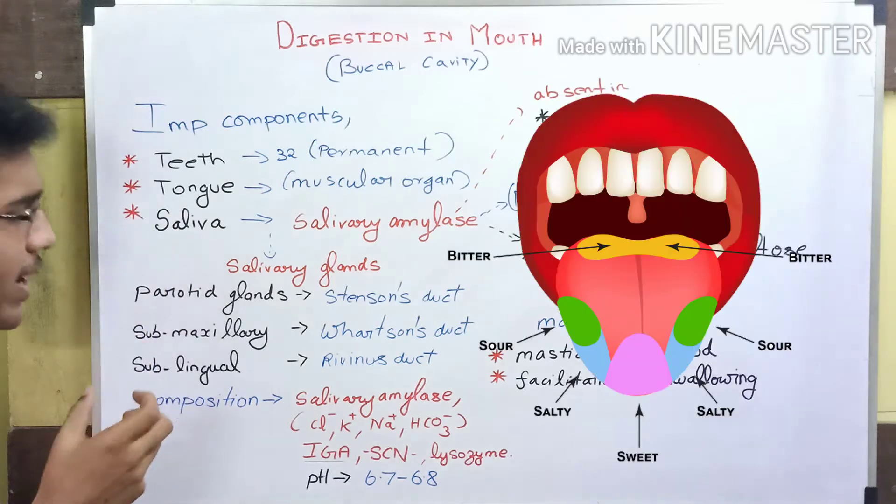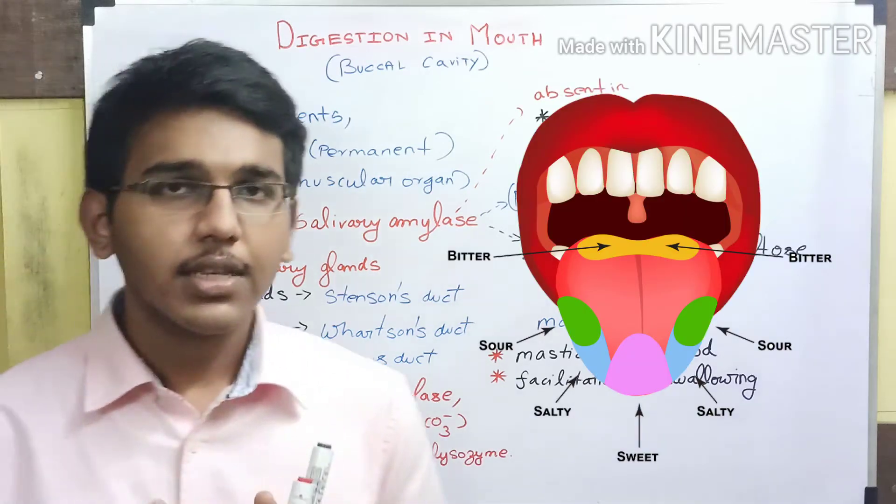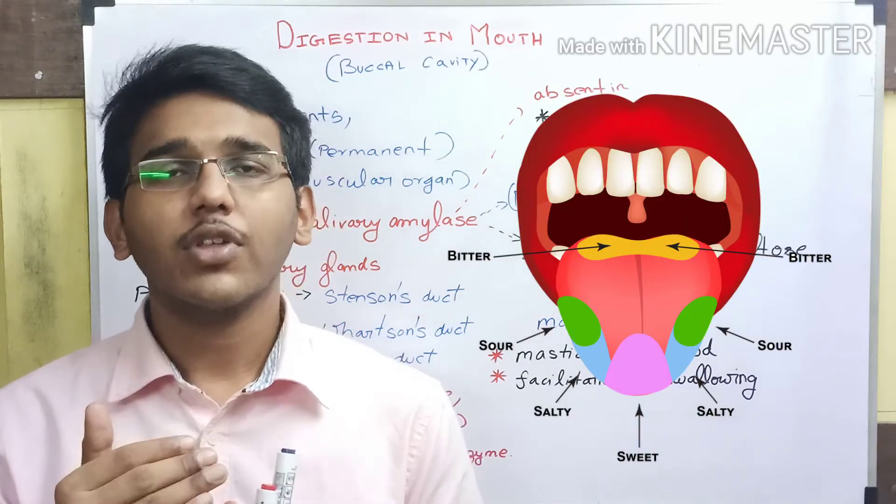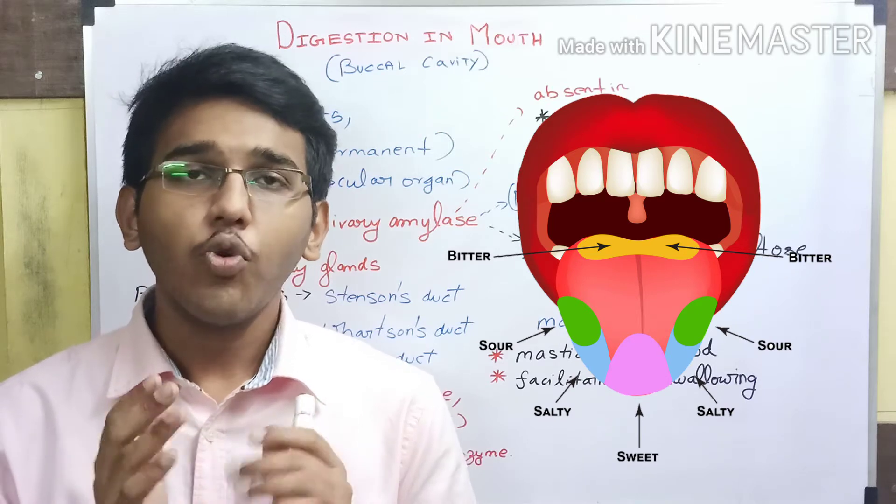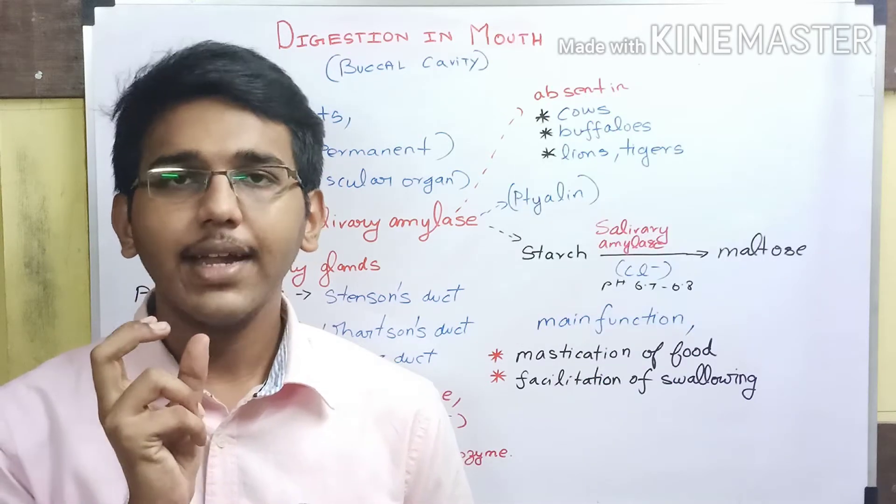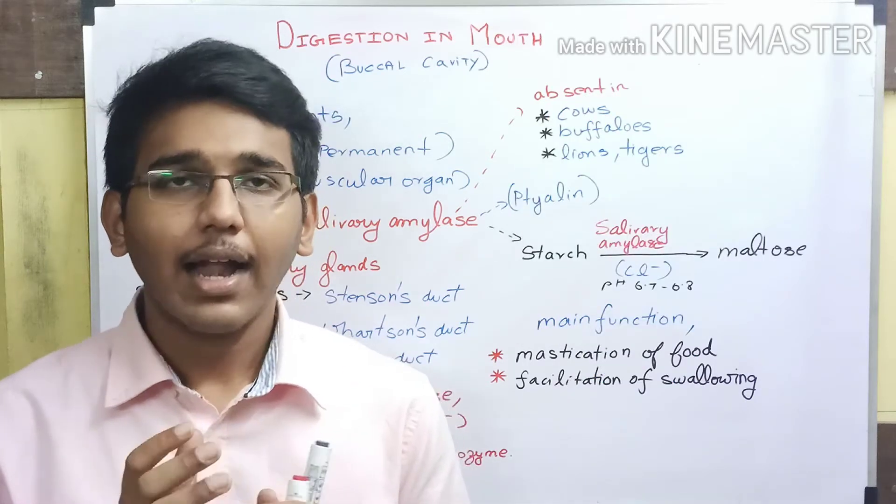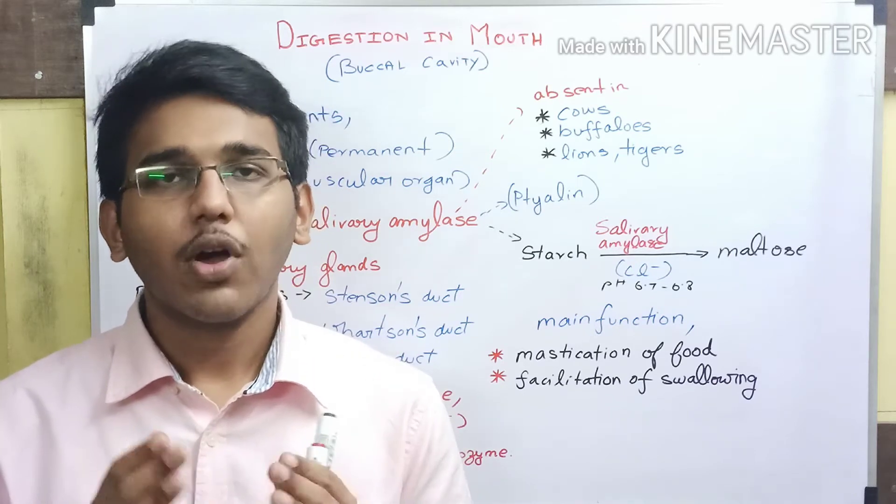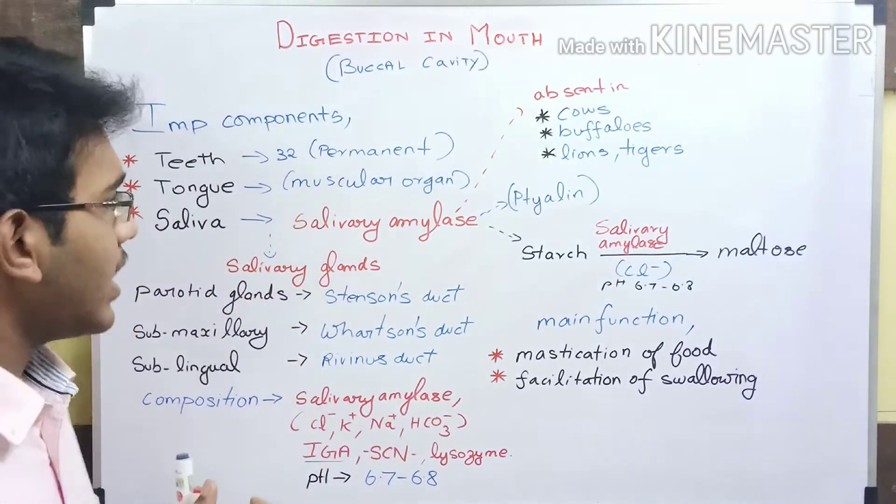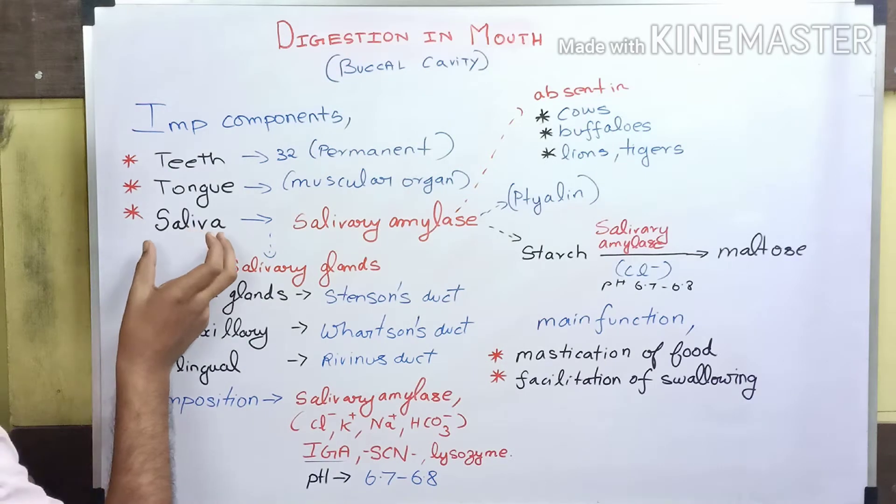The main role of the tongue is to recognize the taste of food materials, facilitate movement of food inside the buccal cavity, and aid the teeth in the process of mastication.